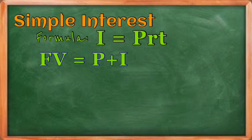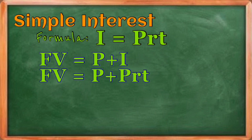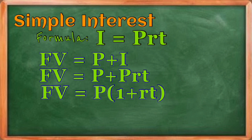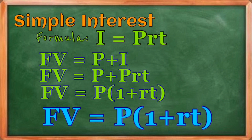From the formula FV = P + I, and substituting I = PRT, we can factor out P to get the alternative formula: FV = P(1 + RT). So in case you're looking for the final value and the interest is not yet given, but you have the rate and the time, you can use FV = P(1 + RT).